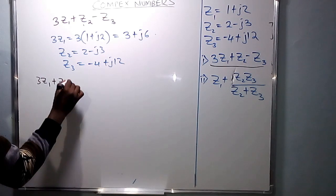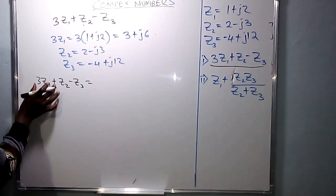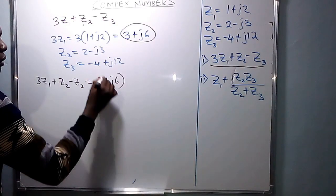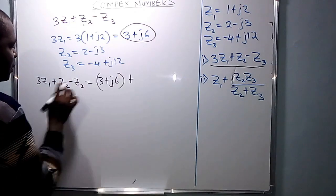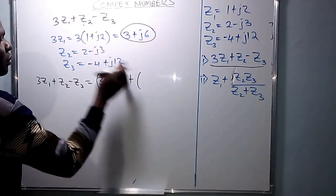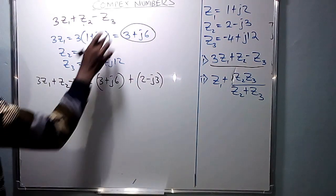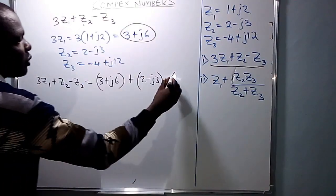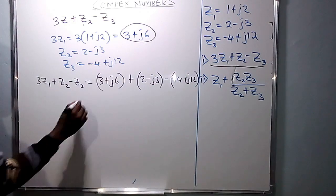Bringing them together: where there is 3Z1, put the value 3 plus j6. Then plus, where there is Z2, put the value of Z2 which is 2 minus j3. Then minus Z3, where there is Z3, put the value of Z3 which is negative 4 plus j12.